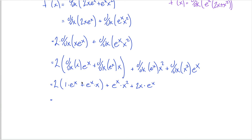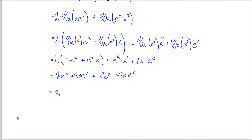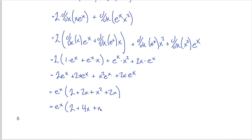I'm going to take it a step further and distribute the 2 through the parentheses, so I get 2 e to the x plus 2x e to the x, rewriting the order I see these terms, plus x squared e to the x, plus 2x e to the x. You might recognize that you have an e to the x in each of these four terms, so you could factor out that e to the x and get 2 plus 2x plus x squared plus 2x.